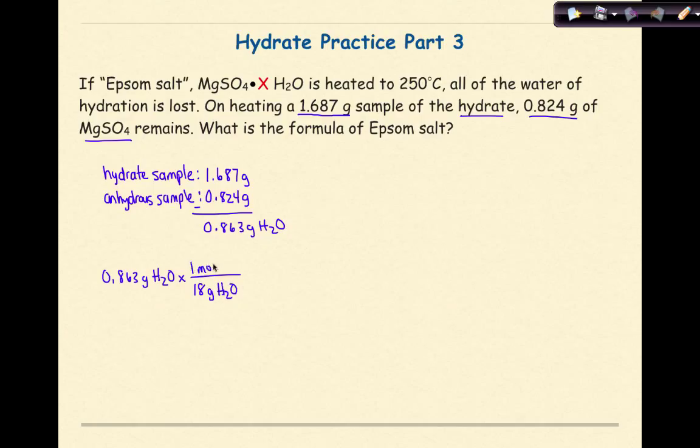One mole of water will go on top, and the next thing that we have to do is check our units. So grams cancel grams. So when we do this calculation here, 0.863 times 1 divided by 18, our answer will be 0.0479 moles of water.